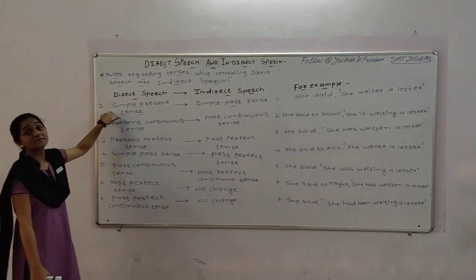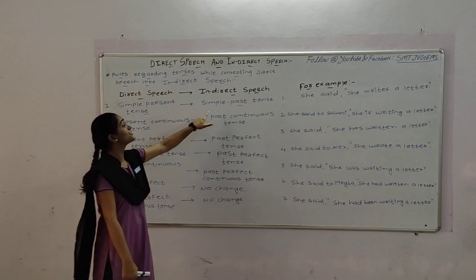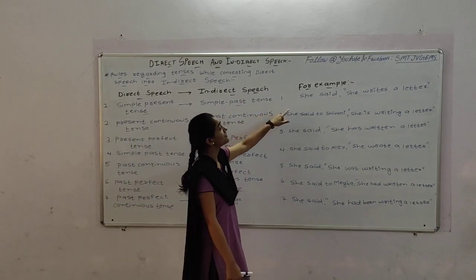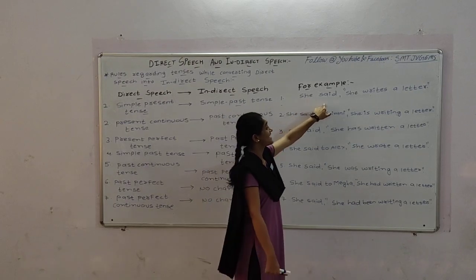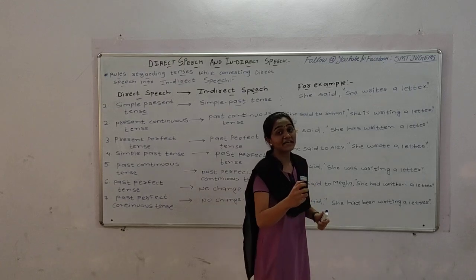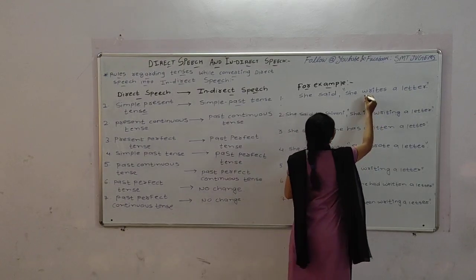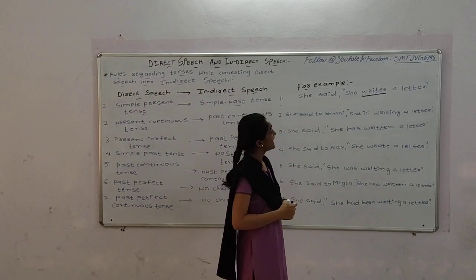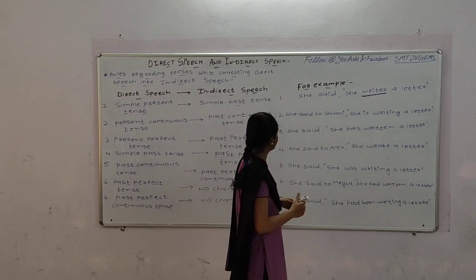First tense: simple present tense. Simple present tense changes into simple past tense. Let's look at an example. She said, she writes a letter. First of all, you have to identify your tense. Here, the word 'writes' is in the present tense. Let's convert this statement into indirect speech.